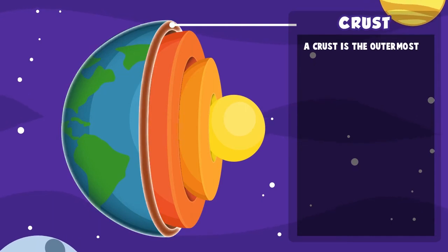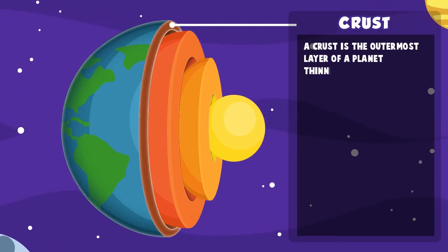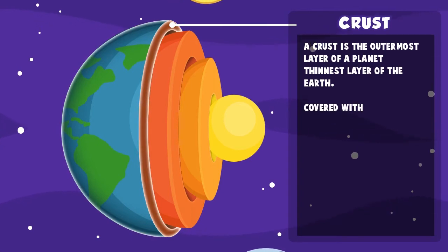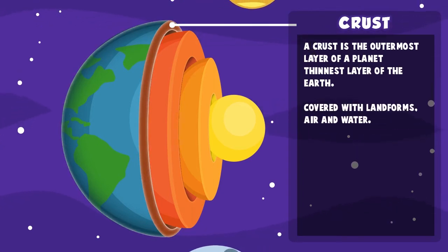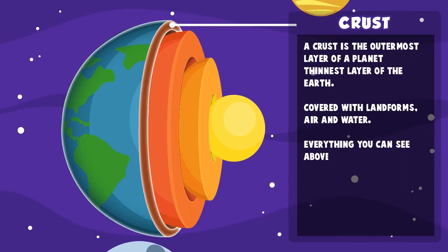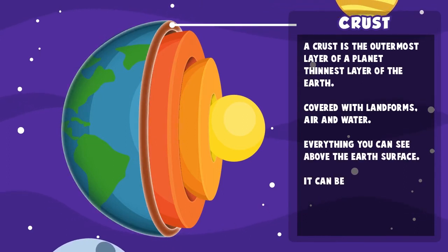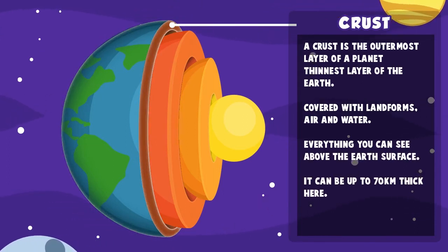Crust. The crust is the outermost layer of the planet and the thinnest layer of the Earth. It's covered with landforms, air, and water - everything you can see above the Earth's surface. It can be up to 70 km thick.